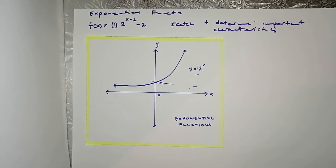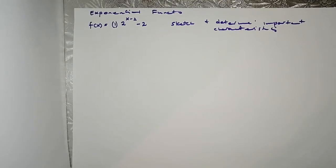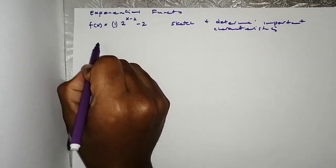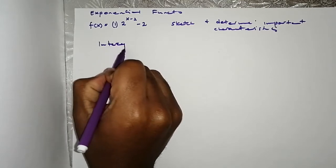So let us do this example where I told you to sketch f(x) = 2 to the x minus 2, minus 2. We're going to sketch the graph and determine the important characteristics. First of all, we're going to find the intercepts.